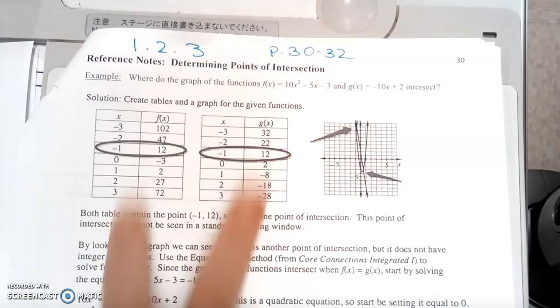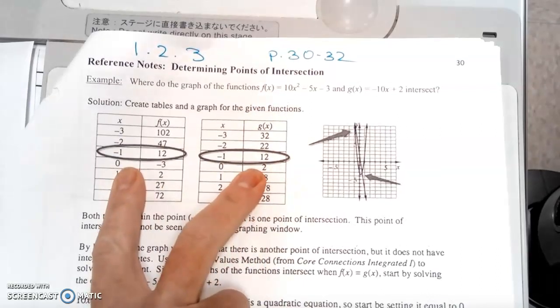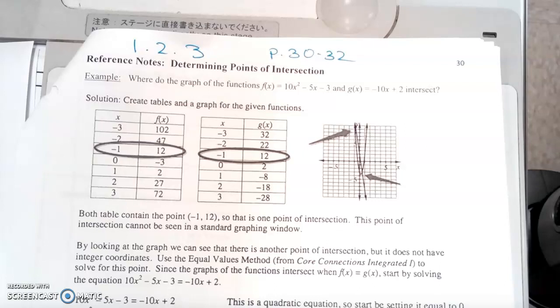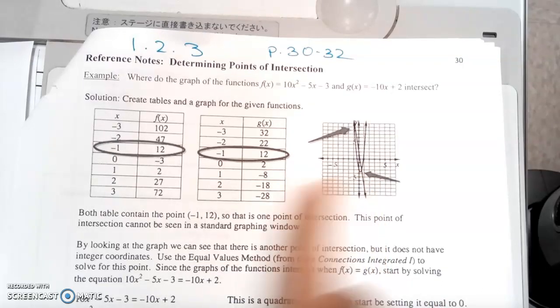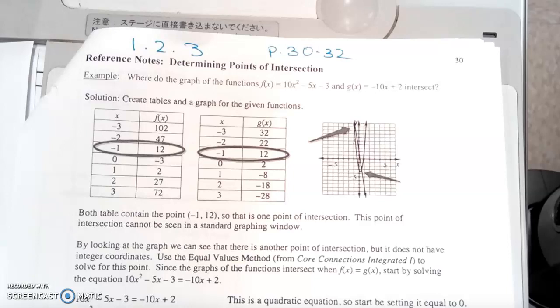If you can make a table, you can find exact points of intersection, but you may not see all of them. Even if you graph it, you might have to pick up your graph, move it over, make it bigger, shrink it, do something so that you can see all of the points of intersection.